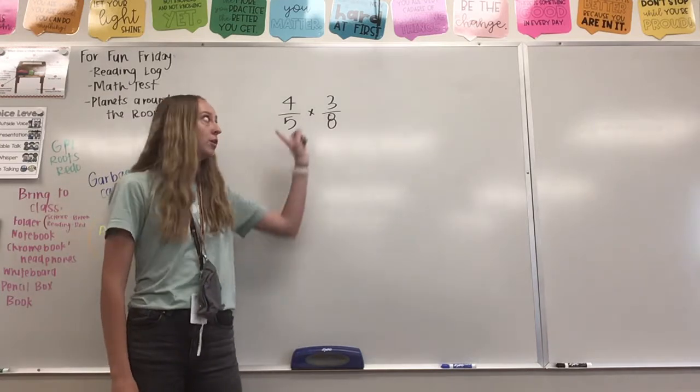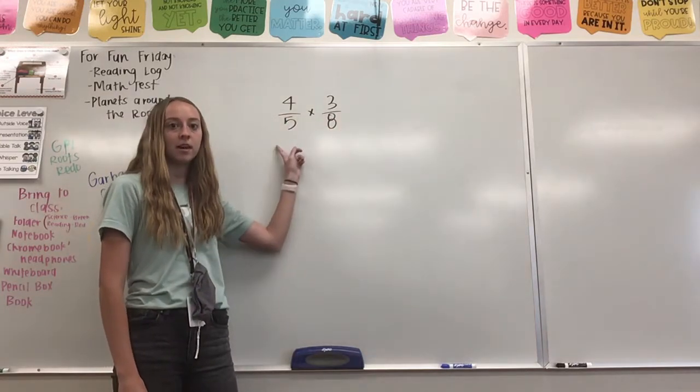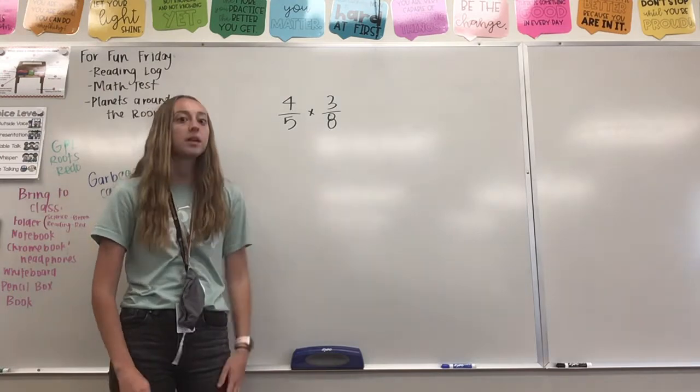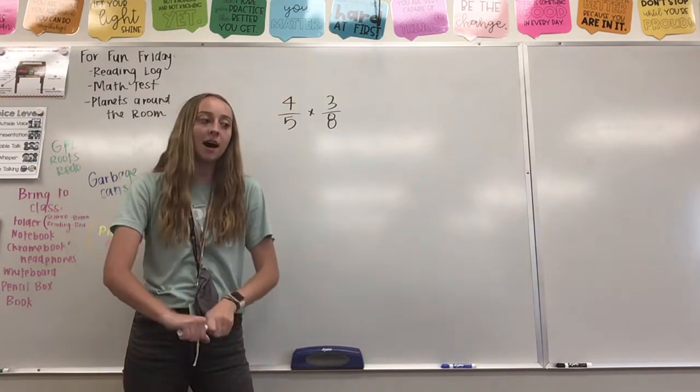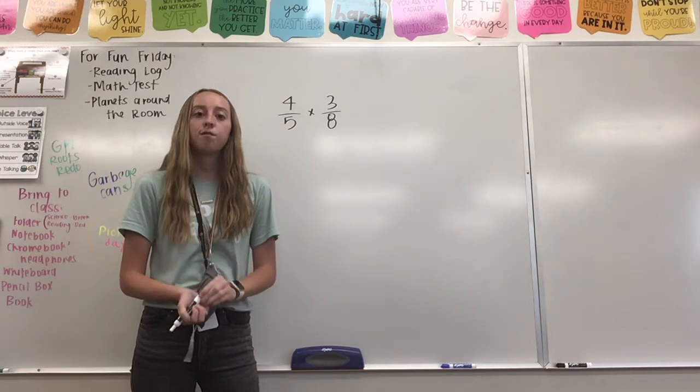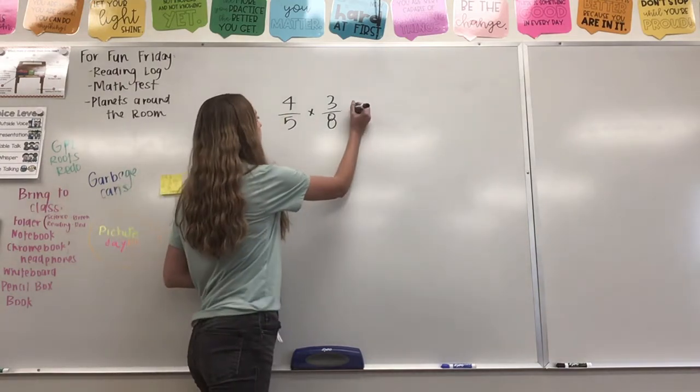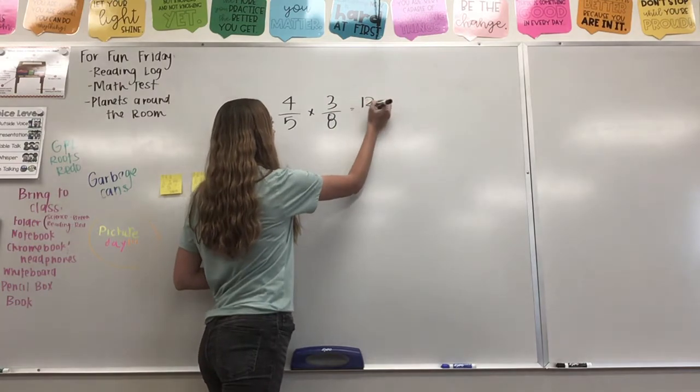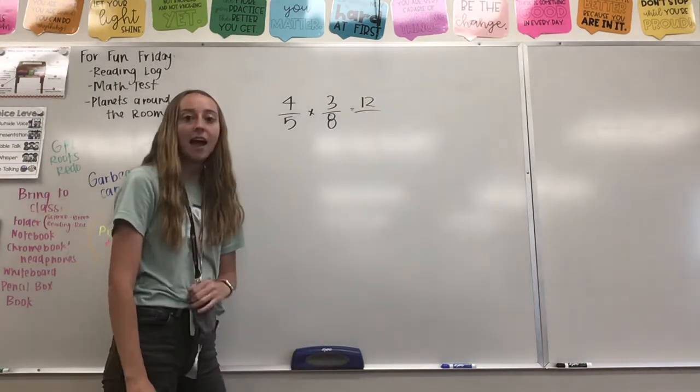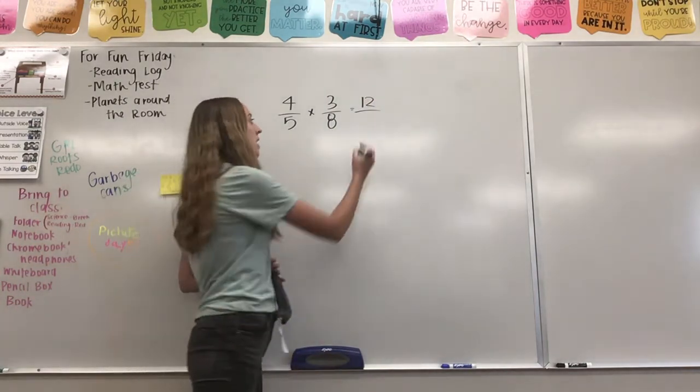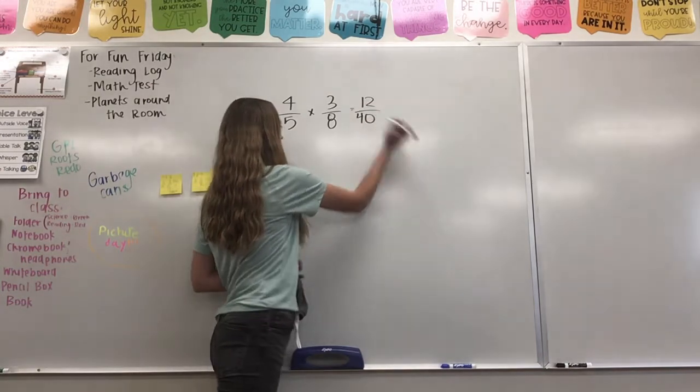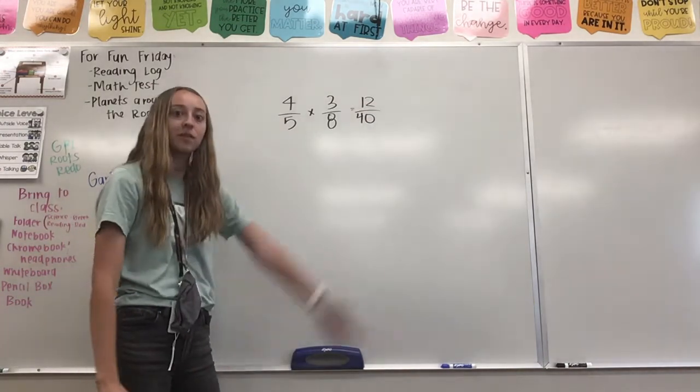I multiply my numerator by my numerator, my denominator with my other denominator. So starting with the top, the numerators, 4 times 3 equals 12, so you can write that, and then 5 times 8 equals 40, and I've got 12 over 40, 12 fortieths.